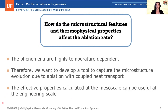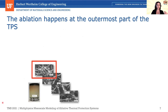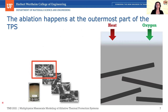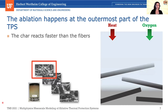First I'll talk about all the physics going on in the material. When we talk about ablation, we are talking about the outermost part of the TPS. There we have the gas flow coming through the atmosphere, the char, and the carbon fibers. The char has a lower density and reacts faster than the fibers. In the presence of heat and the reactant — here oxygen — the char recedes and exposes these fibers. Later, the fibers oxidize and espalate. That is the ablation process.